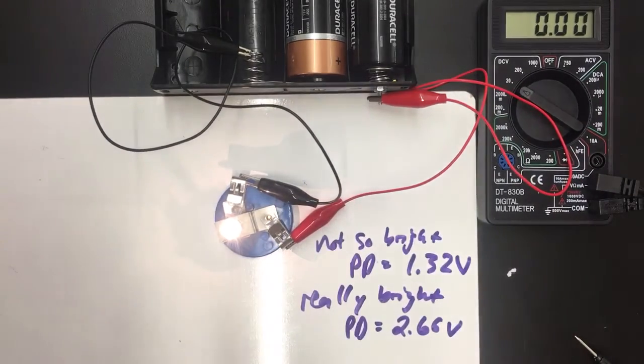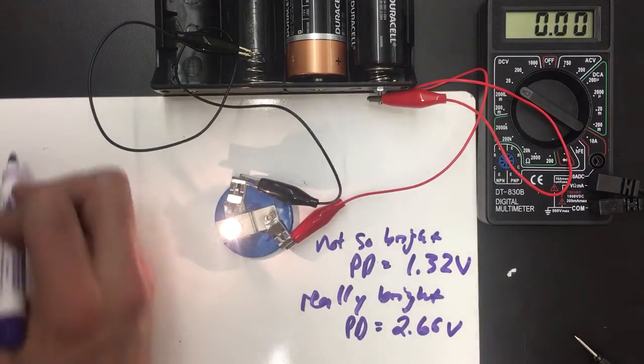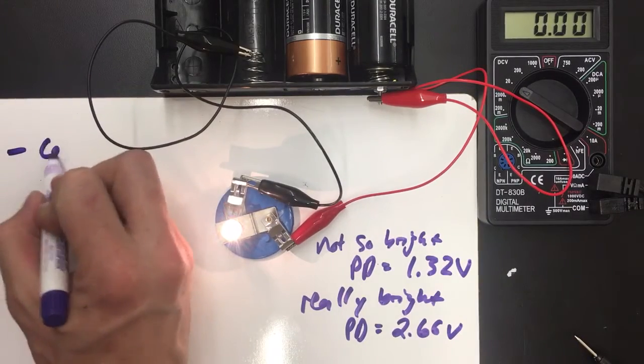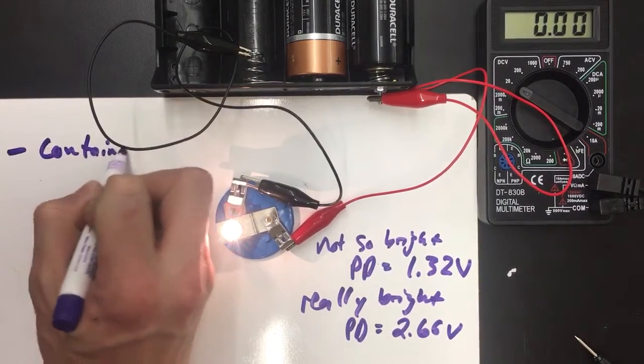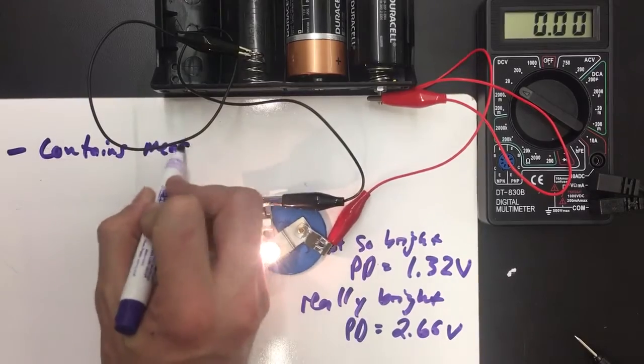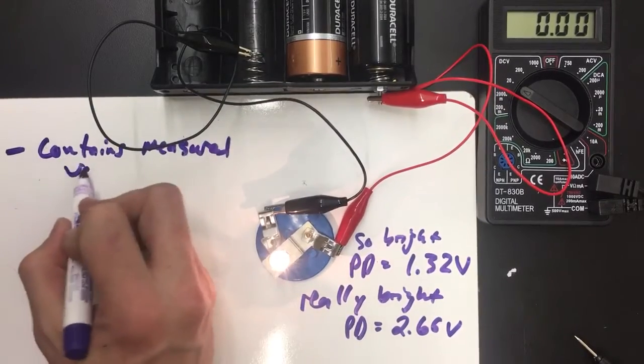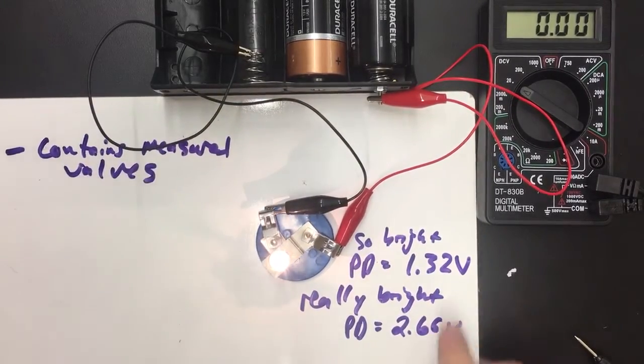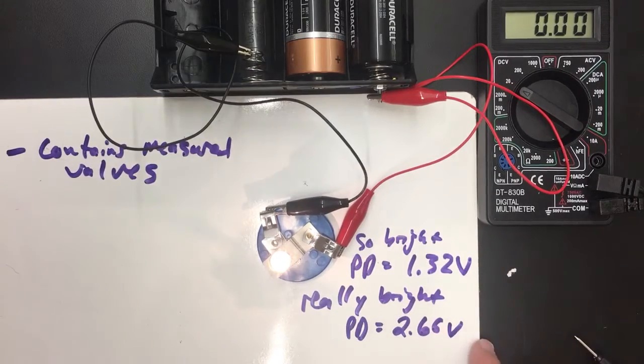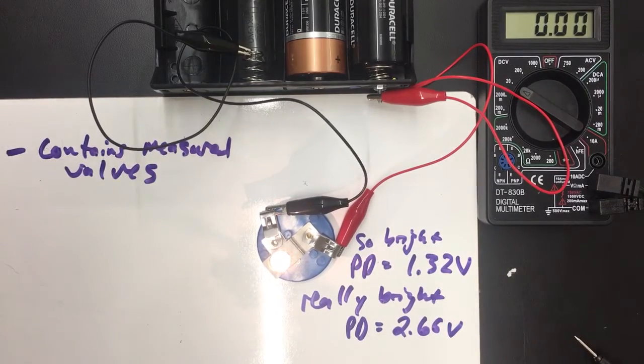Three things that are really important about this evidence. This evidence contains measured values. That is, I'm actually including numbers that I've measured. And if you want to, you can use these numbers, you can use these actual measurements in your own work.